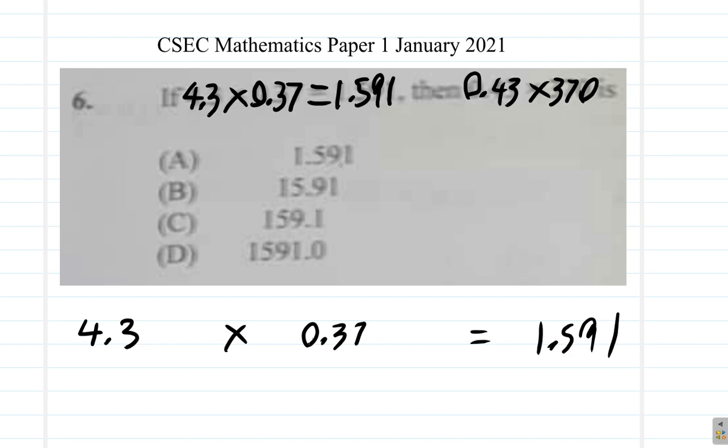Let me see. A is only 1.5 something, B is only 15, it should be 100 and odd, D says 1000 and odd. So the only answer here is C.